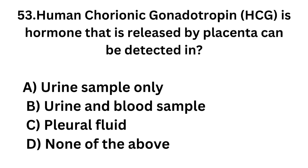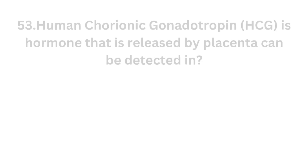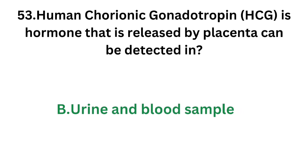Question number 53. Human chorionic gonadotropin (HCG) is the hormone released by the placenta, and it can be detected in which of these samples? Option A - Urine sample only; Option B - Urine and blood sample; Option C - Pleural fluid; Option D - None of the above. The correct answer is urine and blood sample. HCG can be detected in both urine and blood sample.